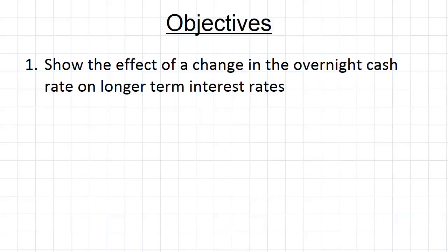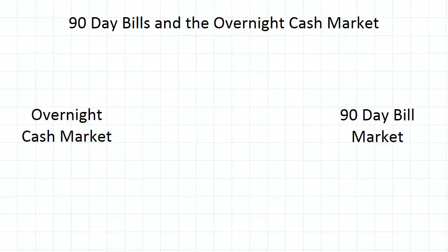Now we're going to have a look at how a change in the overnight cash rate affects longer-term interest rates. To start off with, let's have a look at the effect it would have on the interest rate corresponding to 90-day bank bills. Let us say that the RBA decides to increase the overnight cash rate. What effects is this going to have on the 90-day bank bill market?